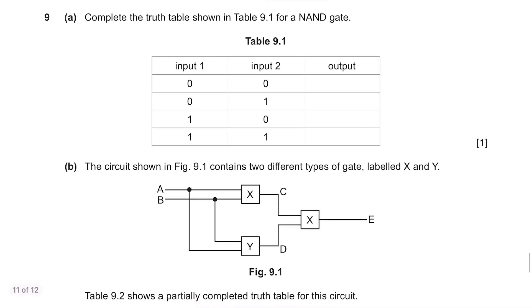Question 9, Part A. Complete the truth table shown in table 9.1 for a NAND gate. NAND gate is the opposite of an AND gate so let's first draw an AND gate. If it was an AND gate, this would have been 0, 0, 0 and 1. So for a NAND gate, it would be 1, 1, 1 and 0.